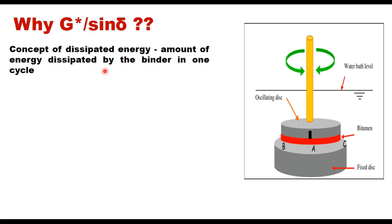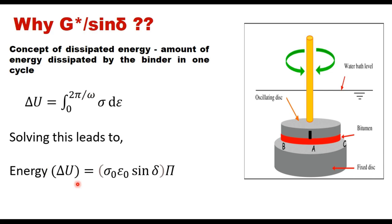The area between stress and strain is the dissipated energy, that is the amount of energy dissipated by the binder in one cycle. If F is the frequency and ω is the angular frequency, then the dissipated energy or change in energy can be estimated using this equation: the integration of 2π/ω times σ times dε.